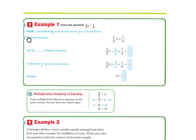Example one. Solve the equation two-thirds N equals one-fourth. So first you've got to think. Two-thirds is next to the N, and whenever you have a number next to a letter, we know that it's multiplication. The inverse of multiplication is going to be division.